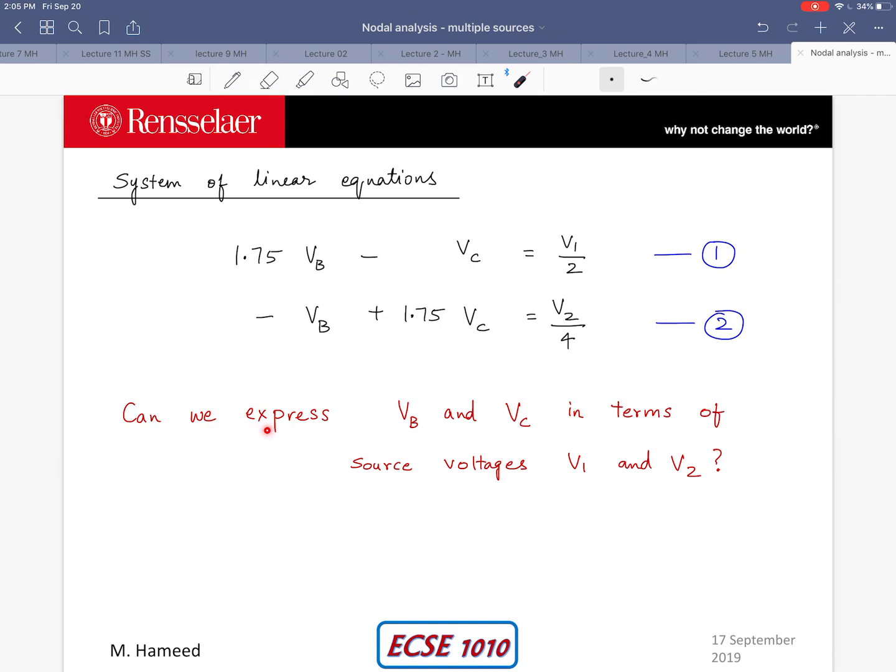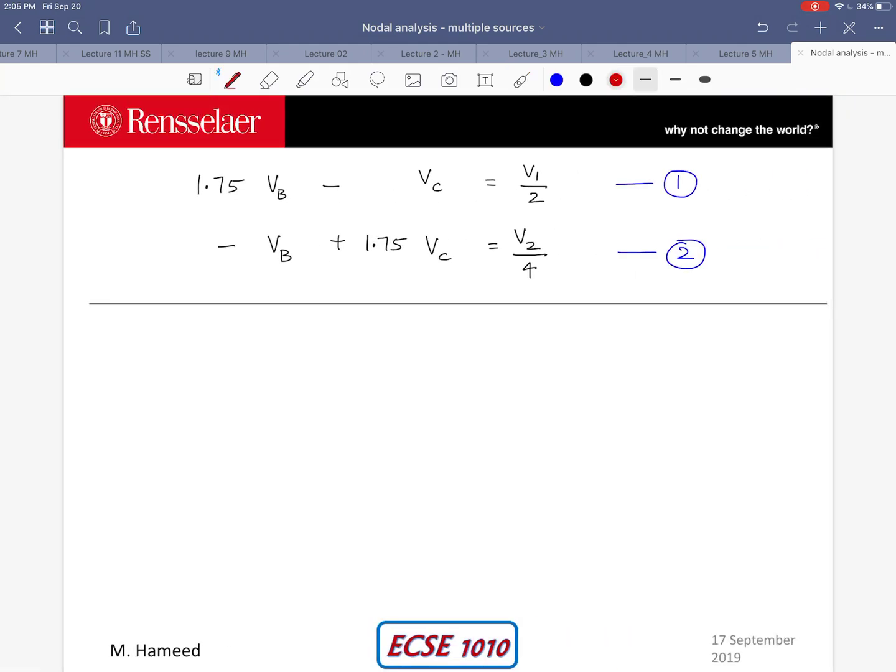But let's try to answer this question now: Can we express VB and VC in terms of V1 and V2? If you notice, equation 1 and 2 are doing a slightly different job. In equation 1 the linear combination of VB and VC is expressed as V1, and in the same manner we have VB and VC in the second equation expressing V2. We want to switch this around and express VB in terms of V1 and V2 and express VC in terms of V1 and V2, and we can do that using substitution. So let's see if we can do that for these two equations.